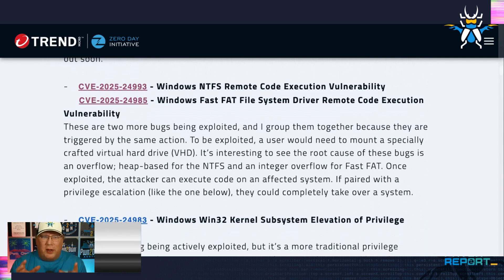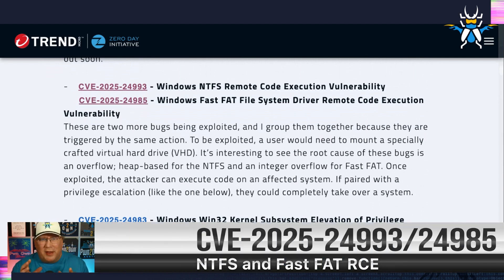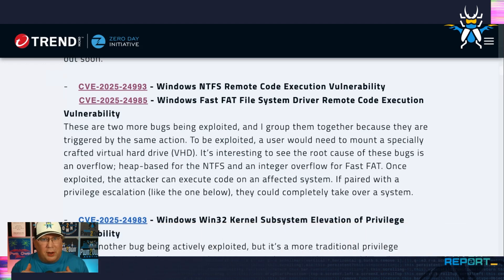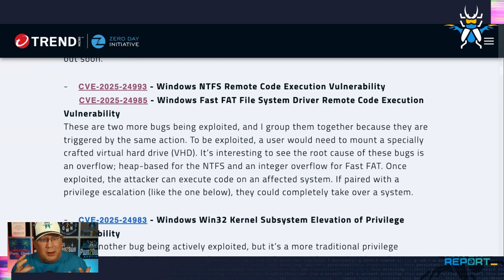Then we've got two bugs that are both listed as active and seem very similar, so I'm guessing they're probably part of the same campaign. They both get code execution when you mount a virtual hard drive, a VHD. One of them is in NTFS and one of them is in Fast Fat — which is what happens to me at Thanksgiving. They get paired with a privilege escalation. It's really unusual to see an overflow in NTFS. This is a heap-based buffer overflow, and an integer overflow on the Fast Fat. Just crazy that we're seeing this.